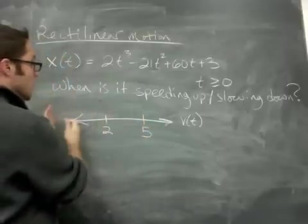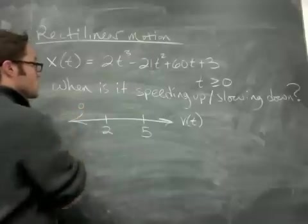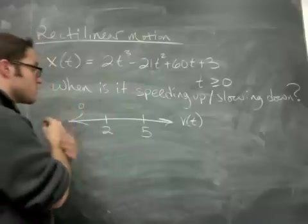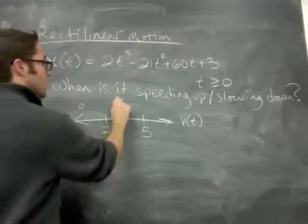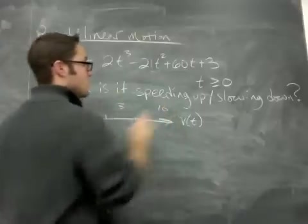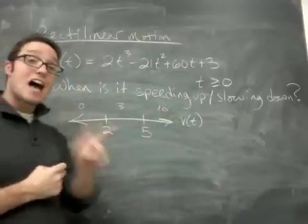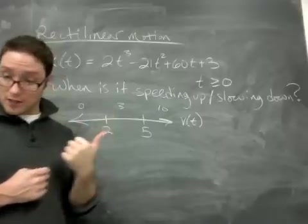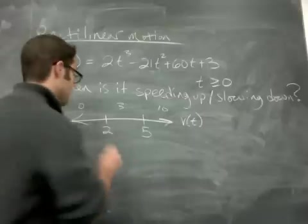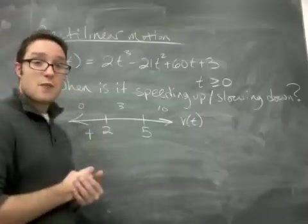So I'm going to check out what goes on to the left of 2, and I can use 0. I can plug in 0 still. Just don't plug in a negative number because we're not talking about negative time. And then plug in maybe 3 and plug in 10 or something into the velocity function, which I erased, but you still have it written down. So if you plug in 0 to the velocity function, I'm going to look at mine, you get positive 60. So the velocity is positive.